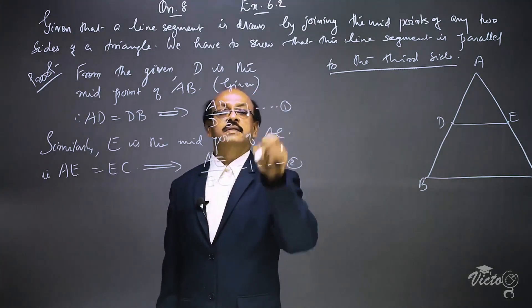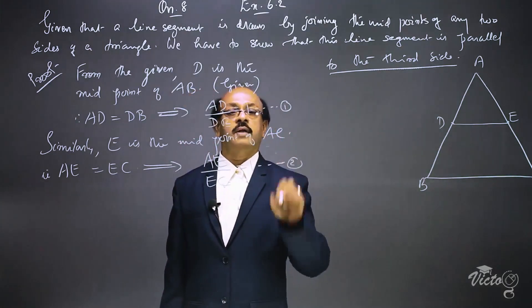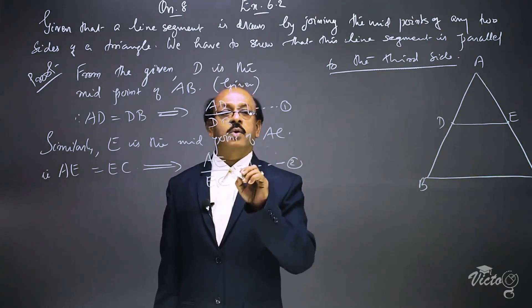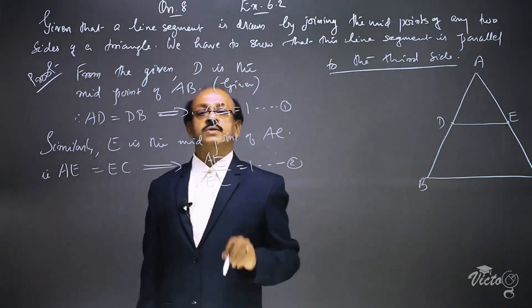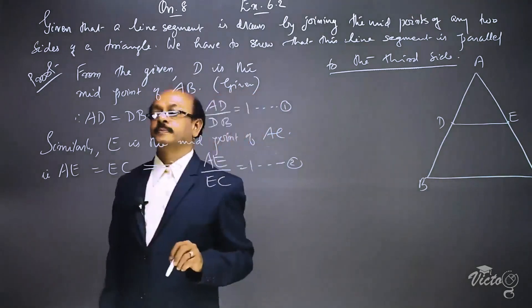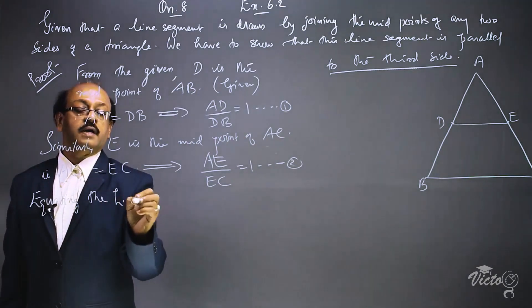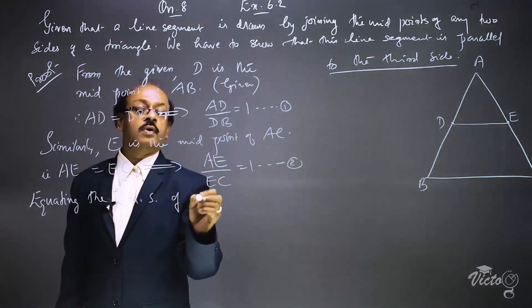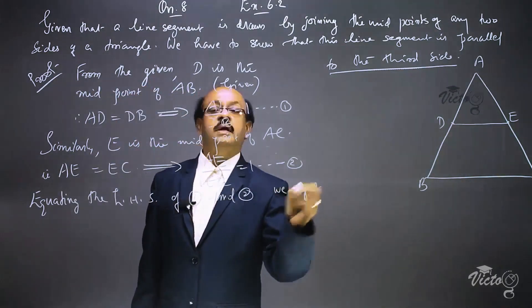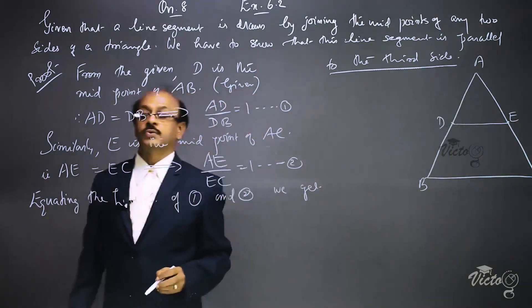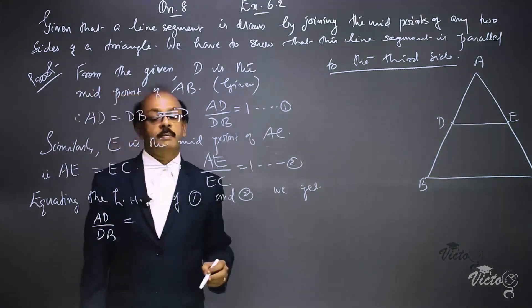The right-hand sides of equation 1 and equation 2 are equal. That means we can equate the left-hand sides of equations 1 and 2, giving us AD/DB = AE/EC.